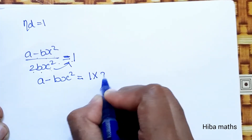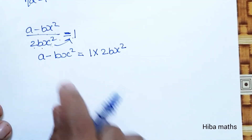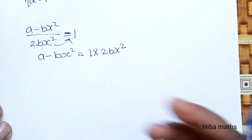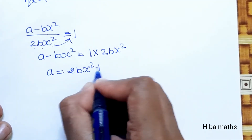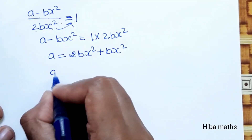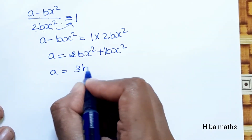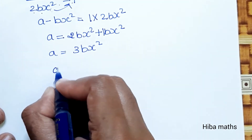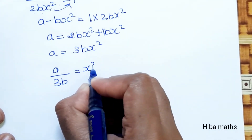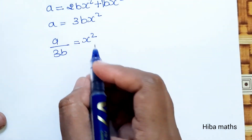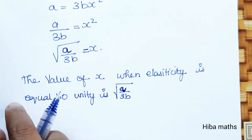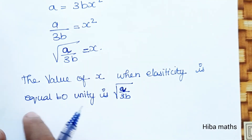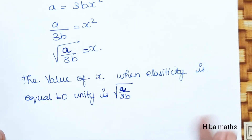Setting eta_d equal to 1: 1 equals (a minus bx squared) divided by 2bx squared. Cross multiplying gives 2bx squared equals a minus bx squared. So 2bx squared plus bx squared equals a, giving 3bx squared equals a. Therefore x squared equals a by 3b, so x equals the square root of a by 3b. The value of x when elasticity equals unity is root of a by 3b. Thank you so much for watching.